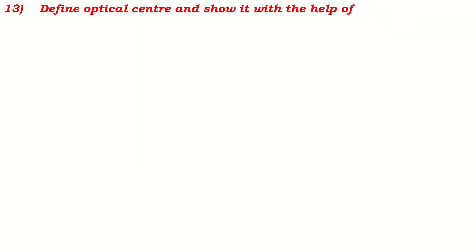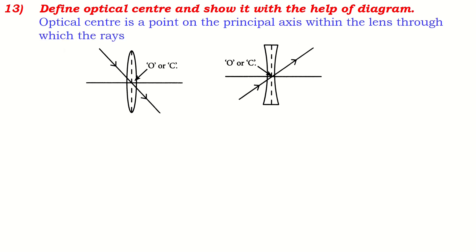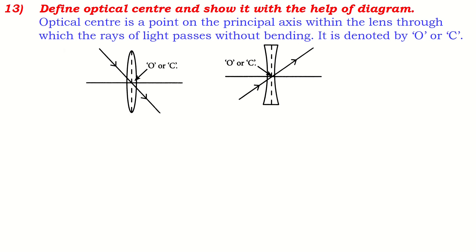Define optical center and show it with a diagram. The optical center is the central point of the lens lying on the principal axis inside the lens. A ray of light passing through this point passes straight without bending — this is the speciality of this point. Optical center is a point on the principal axis within the lens through which rays of light pass without bending. It is denoted by the symbol O or C.